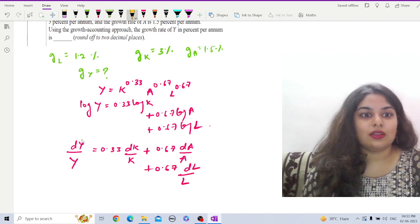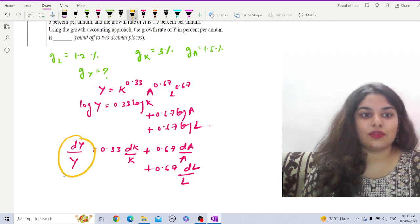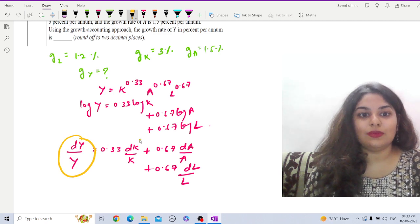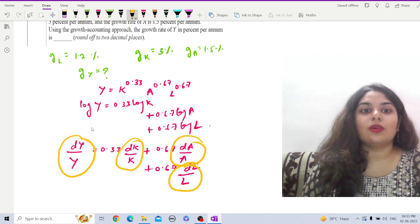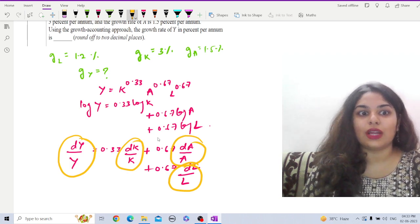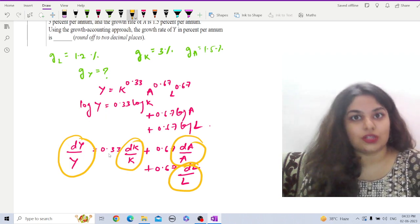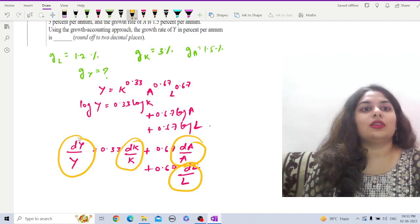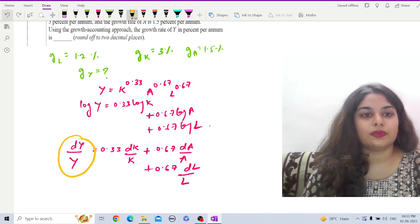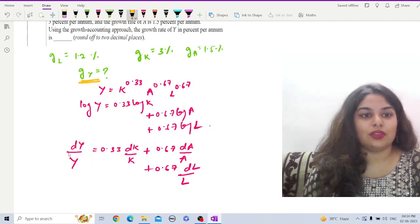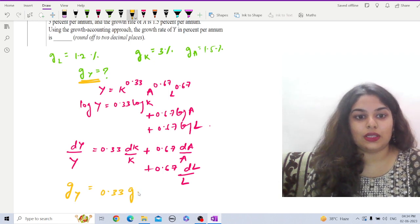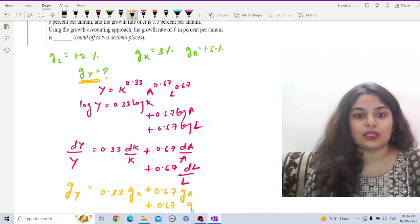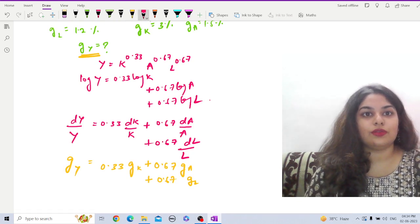Now if we multiply with 100 on both sides, this will show the percentage change in income, percentage change in capital, percentage change in technology, and percentage change in labor. Obviously if we multiply 100 on both sides it will get cancelled. That means percentage change in income equals 0.33 times percentage change in capital plus 0.67 times percentage change in technology plus 0.67 times percentage change in labor.